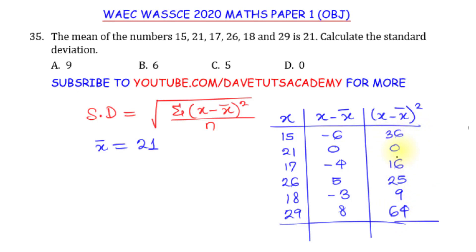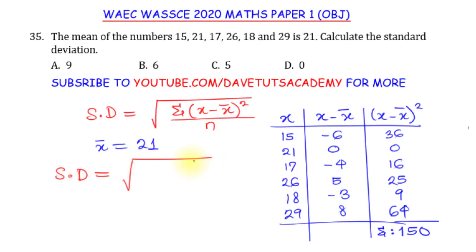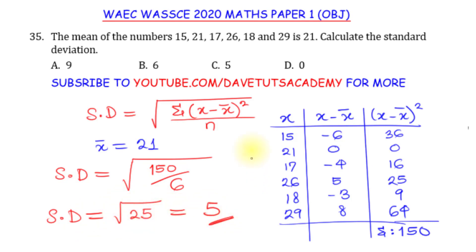Adding the squared values: 36 plus 16 is 52; 52 plus 25 is 77; 77 plus 9 is 86; 86 plus 64 is 150. So the sum of this data is 150. We plug into the standard deviation formula: the square root of 150 over 6. Dividing 150 by 6 gives 25, and the square root of 25 is 5. Looking at the options, option C is 5, and that is the correct solution.